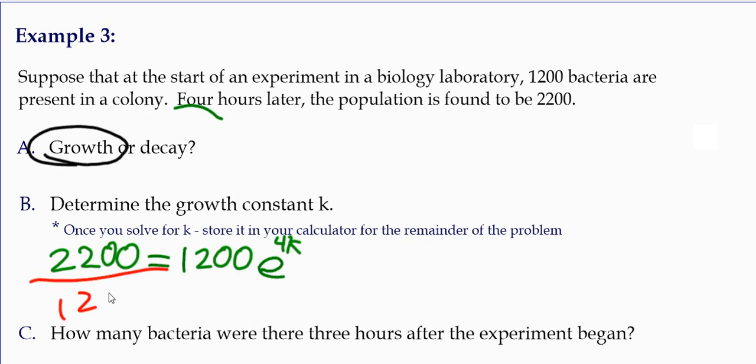So to solve this, you divide by 1,200. The zeros cancel. 22 over 12, you can reduce that to 11 over 6. It equals e to the 4k.